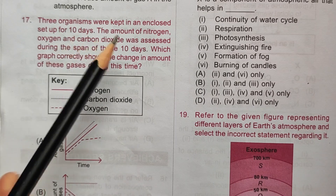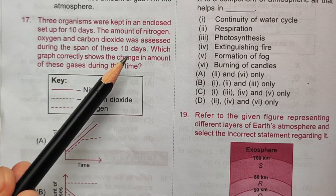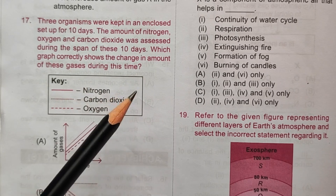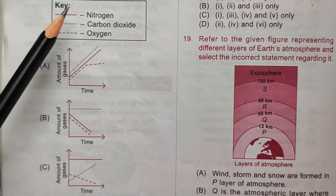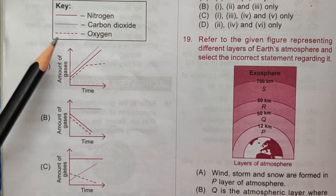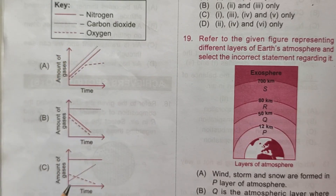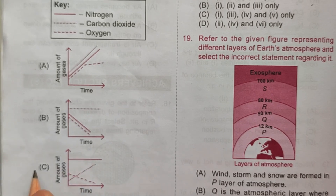Question 17: Three organisms were kept in an enclosed setup for 10 days. Nitrogen (straight line) remains constant, oxygen (dash-dash-dash line) decreases as organisms breathe in, and carbon dioxide (dotted line) increases as organisms breathe out. The correct answer is option C.